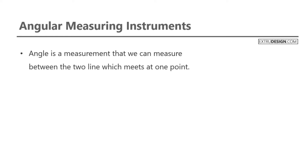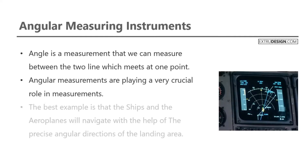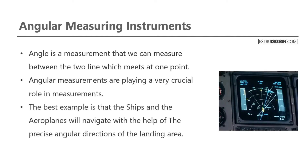Angle is a measurement that we can measure between two lines which meet at one point. Angular measurements play a very crucial role in measurements. The best example is that ships and aeroplanes navigate with the help of precise angular directions of the landing area.